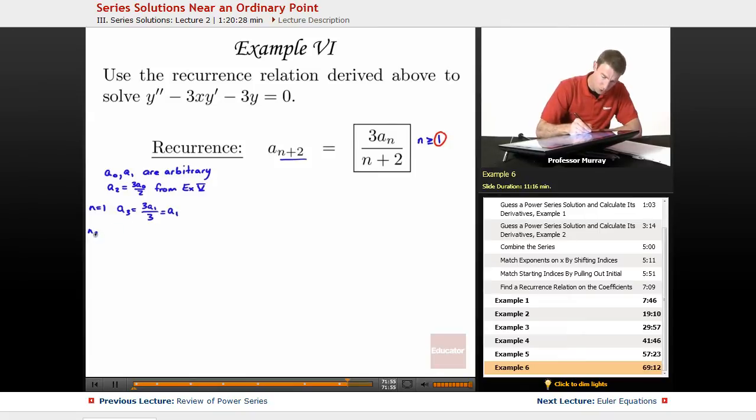N equals 2 gives me A4 is equal to 3A2 over 4, but A2 was 3A0 over 2, so that's 3 times 3, I'll write that as 3 squared times A0 over 2 times 4.